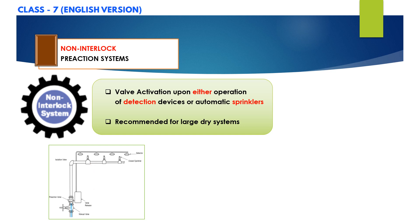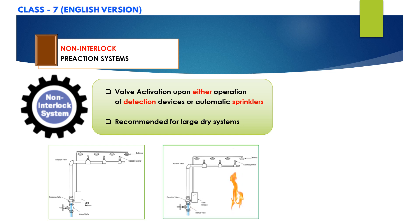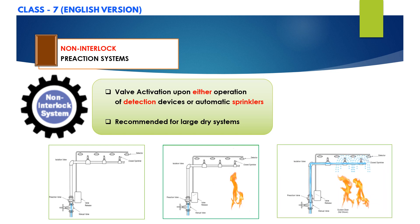In these systems, the deluge valve will open when either the detection system operates or a loss of pneumatic pressure in the sprinkler system occurs. When the deluge valve opens, water will flow into the sprinkler piping and any other opening on the system. An advantage of this kind of system is that if the detection system fails to operate or malfunctions, the system can operate as a dry system.